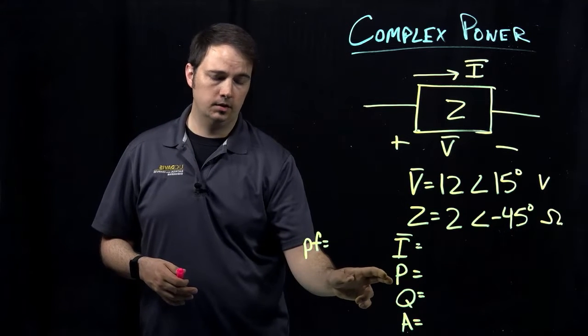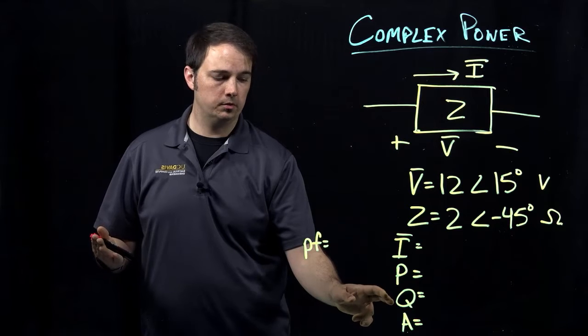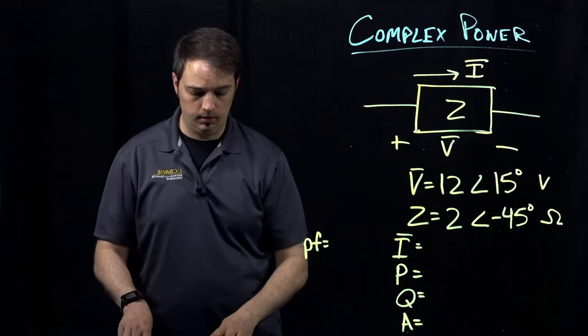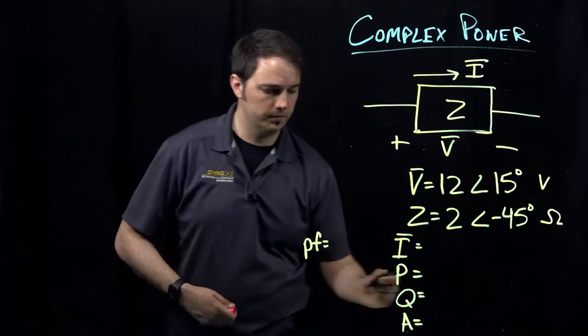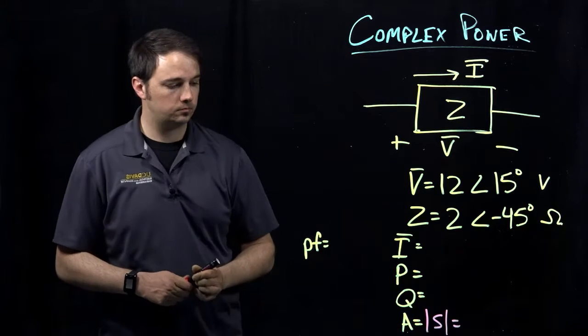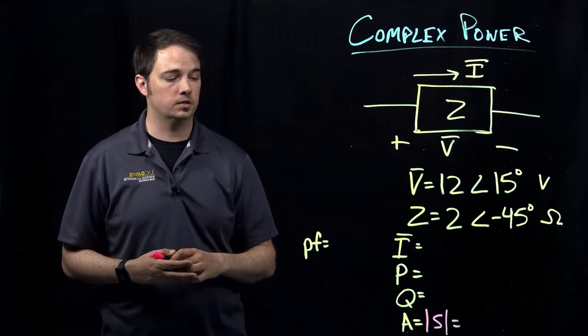Specifically looking at capital P, which would be the average or real power, capital Q, which would be the reactive power, capital A, which would be the apparent power. I've also indicated this quantity as the magnitude of my complex power S. Then also thinking about what the power factor is in this case.